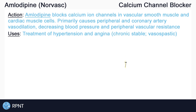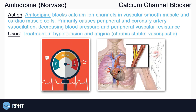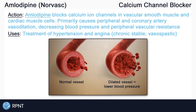Amlodipine is used in the treatment of hypertension and angina. Amlodipine causes peripheral vasodilation which lowers blood pressure. For angina, the dilation of the coronary arteries and the decrease in peripheral vascular resistance reduces the workload of the heart, or makes it easier for the heart to pump.